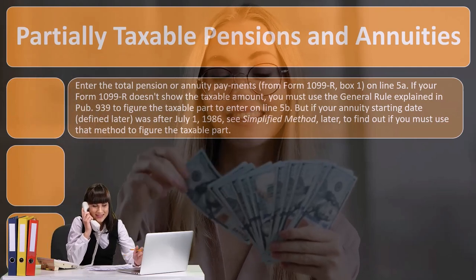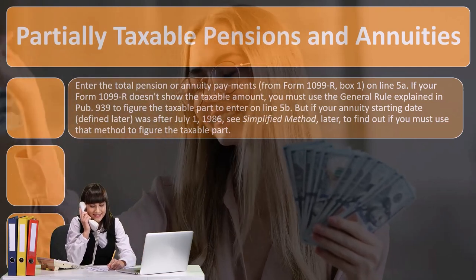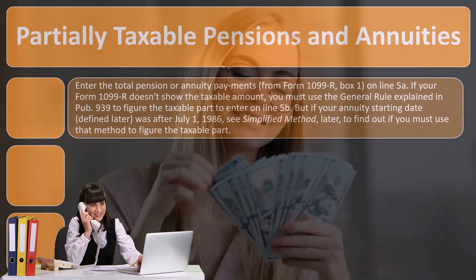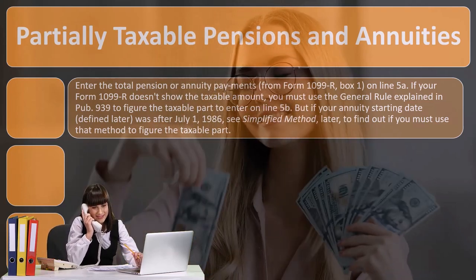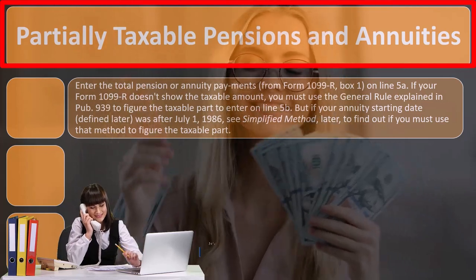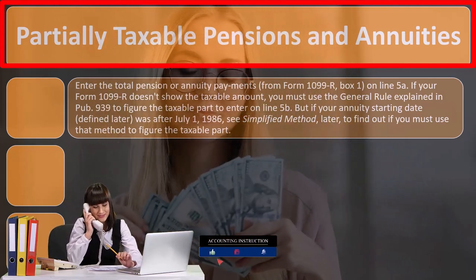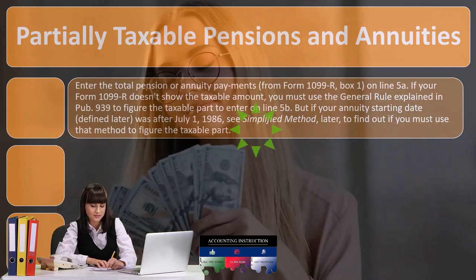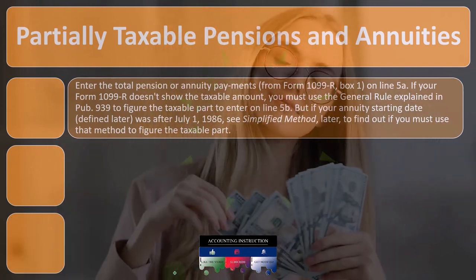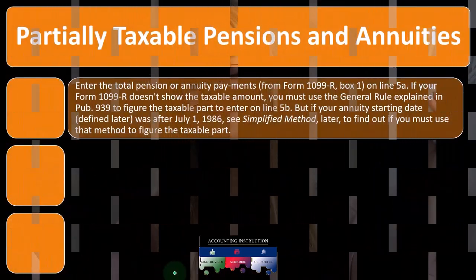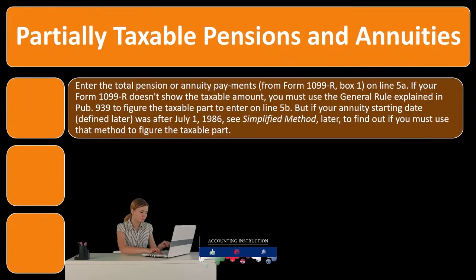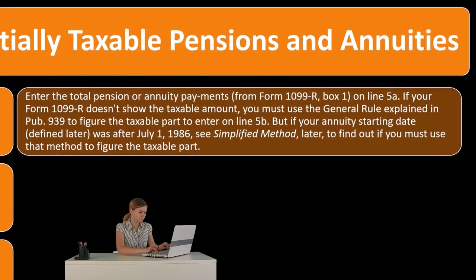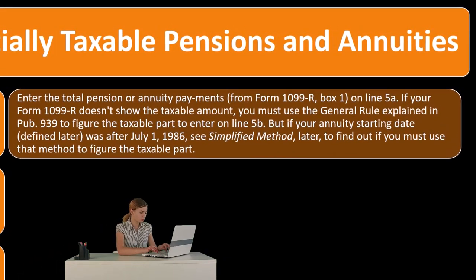For partially taxable pensions and annuities, where only part is taxed, you'll have a taxable amount and a non-taxable amount. Enter the total pension or annuity payments from Form 1099-R box 1 on line 5a. If your Form 1099-R doesn't show the taxable amount, you must use the General Rule explained in Publication 939 to figure the taxable part to enter on line 5b.